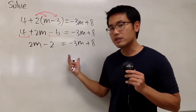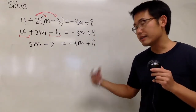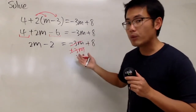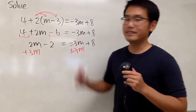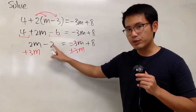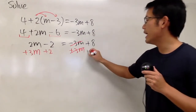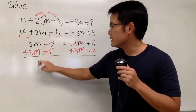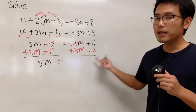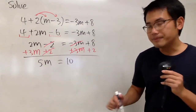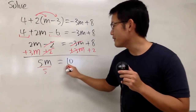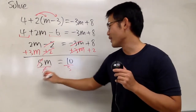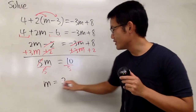We are going to move the variable terms to one side and the numbers to the other side. For the minus 3m, let's add 3m to cancel it out, and do the same thing on the other side. In the meantime, we have the minus 2, so let's add 2 here and add 2 here, so minus 2 and plus 2 cancel. On the left-hand side, 2m and 3m give us 5m, and that's equal to 8 plus 2 which is 10. Lastly, this is 5 times m, so we divide both sides by 5. Put it over 5, and 10 over 5 is going to be 2. Final answer: m is equal to 2.